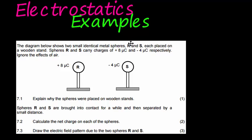Hi and welcome to another electrostatics lesson. We're looking at some examples, and here comes another example from a past paper. In this one they tell us that we have a diagram showing two small identical metal spheres.